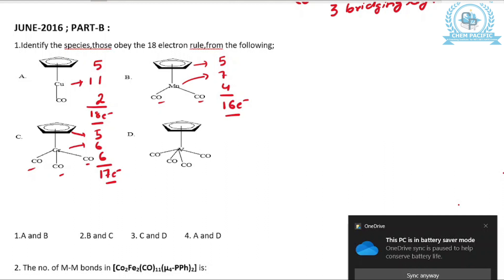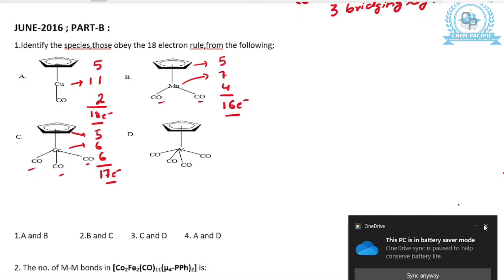For species D: CP is in the η5 mode, so that is 5 electrons. Vanadium has valence electrons 5. There are 4 CO, so 4 × 2 = 8. Total: 5 + 5 + 8 = 18 electrons. So A and D are both 18-electron species. The answer is A and D.